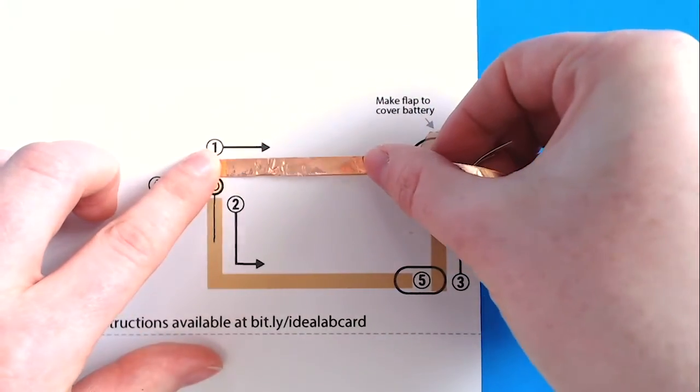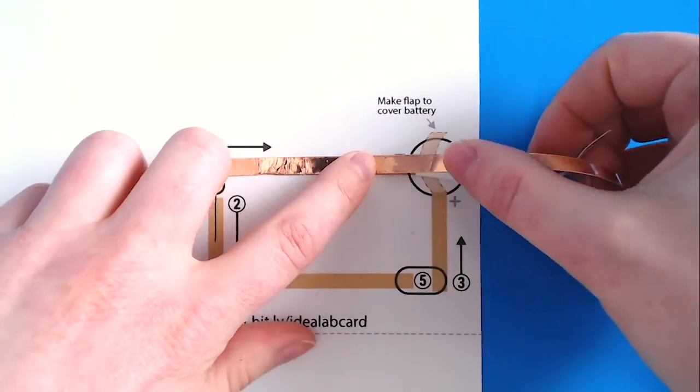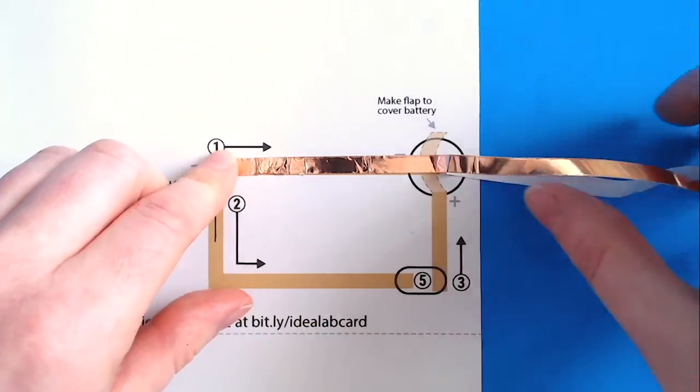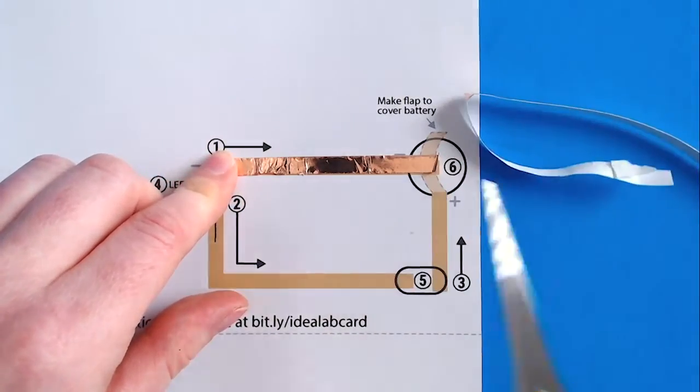To start, remove some of the white paper backing and press along line number one. At the end of the line, cut with scissors or tear the tape with your hands.